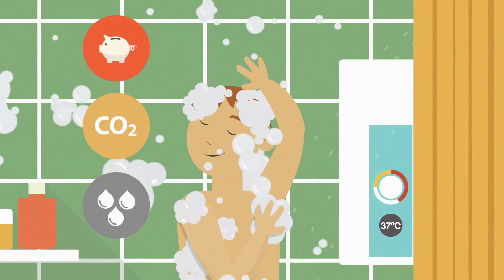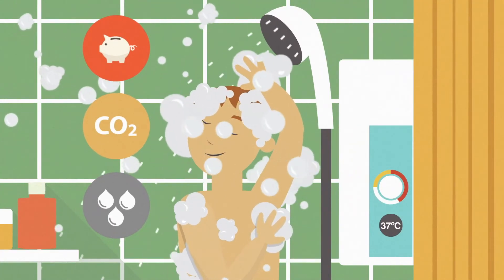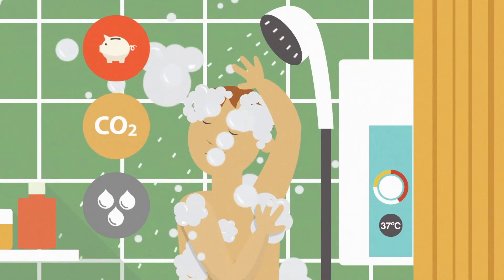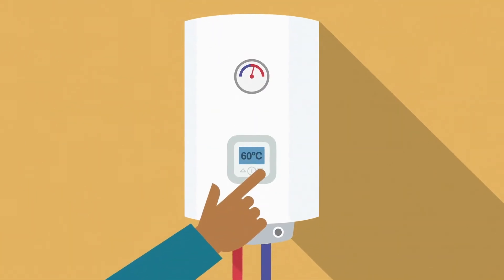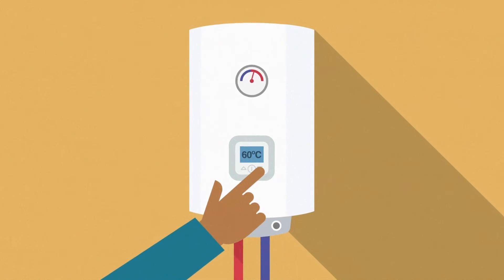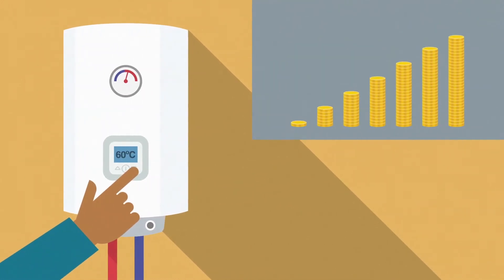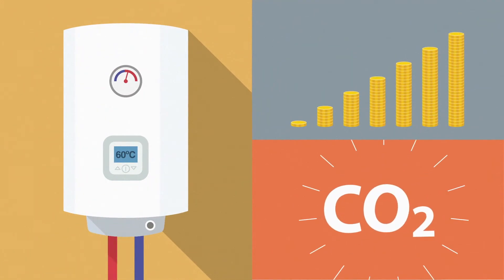Fitting an efficient shower head could save a family up to 200 euros a year and reduce water use. And turning down the thermostat on your boiler even by one degree Celsius could save even more money and reduce CO2 emissions.